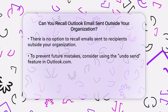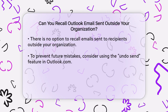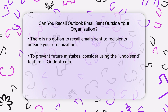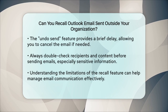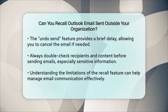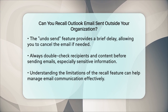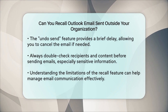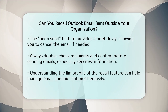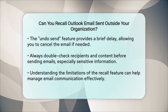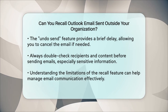So what can you do if you've sent an email outside your organization by mistake? Unfortunately, there's no way to recall it. However, you can take preventive measures in the future. For instance, you can use the Undo Send feature in Outlook.com, which delays sending the email for a few seconds, giving you a chance to cancel it if you change your mind.